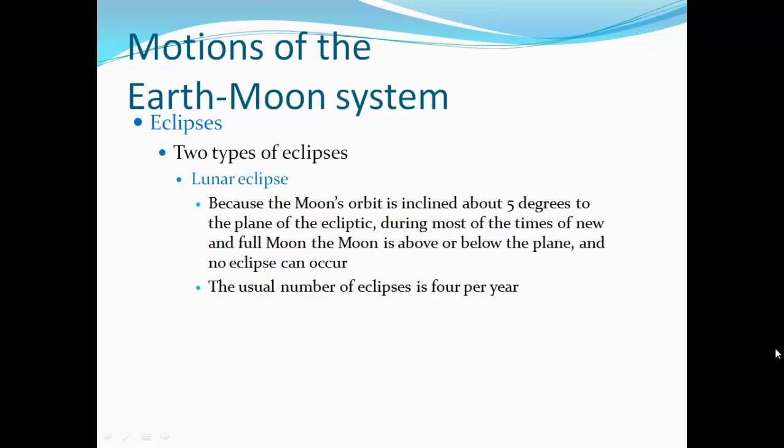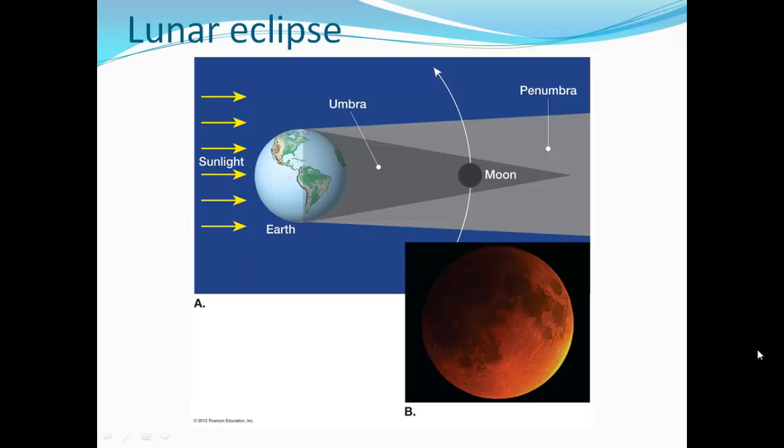The usual number of eclipses is about four per year. So here we have the Sun and the Moon, and the Sun and the Earth are on the same side. So the Earth is casting a shadow on the Moon. It's blocking some of that sunlight. So then we actually have very little sunlight reflecting off the Moon, but it kind of casts this orange glow. The umbra is the darker part of the shadow, and penumbra is where there's a little bit of light escaping.